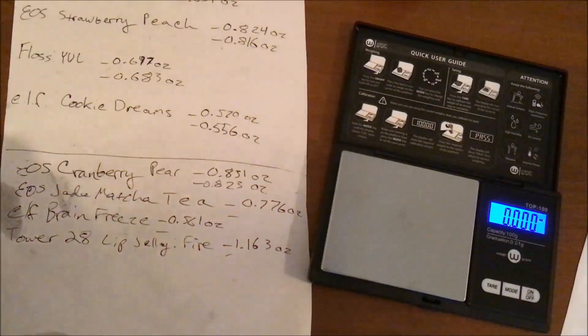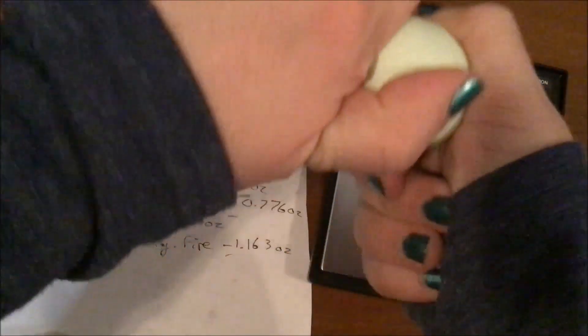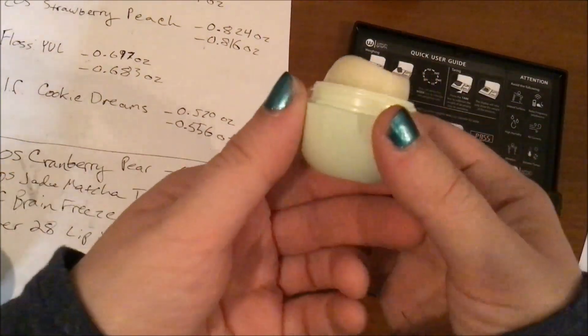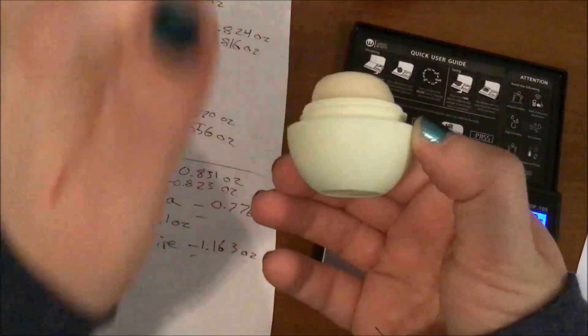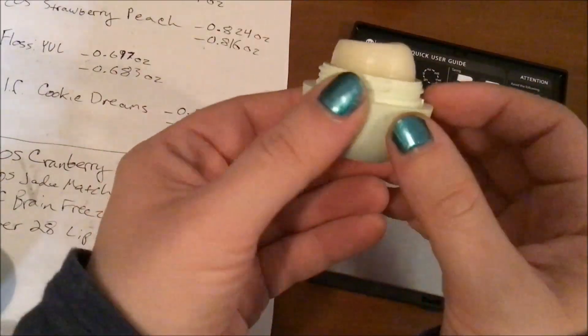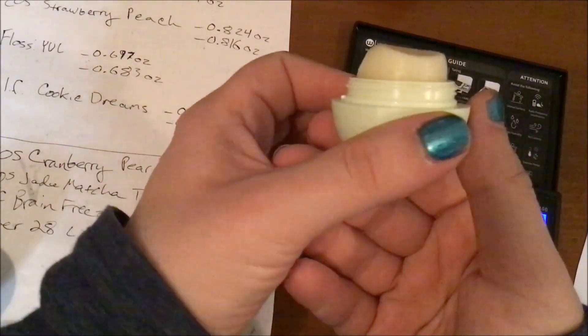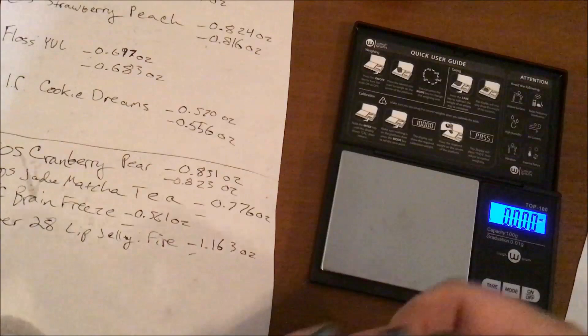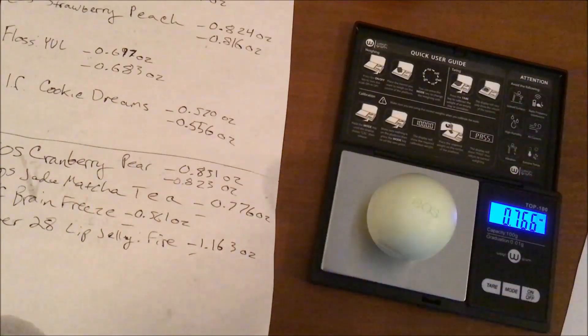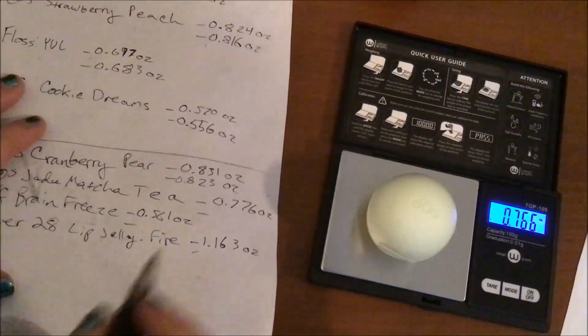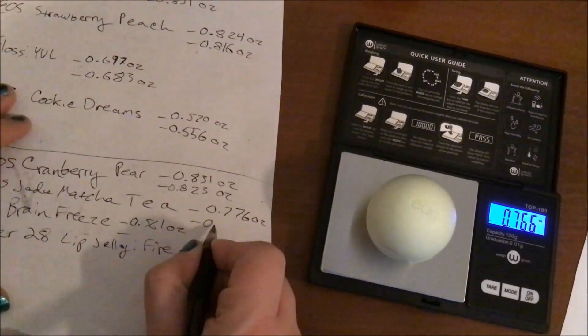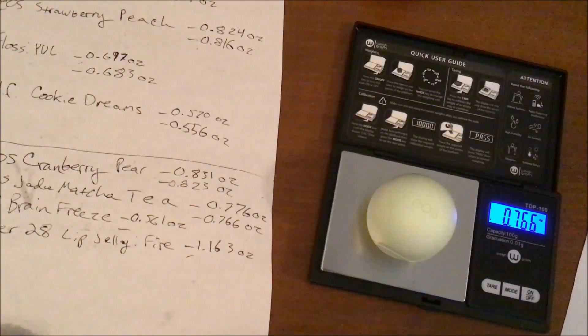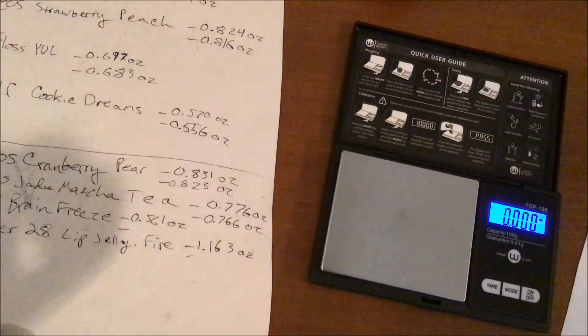Then our Jade Matcha Tea EOS was at 0.776 ounces and is now looking like this. I started swooping in on that side, so it's still high in the back but again, nice progress, nice dips made on it. Let's see weight-wise how much of a dent did we put in. Oh wow, okay, 0.766.